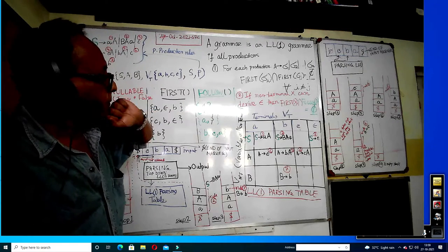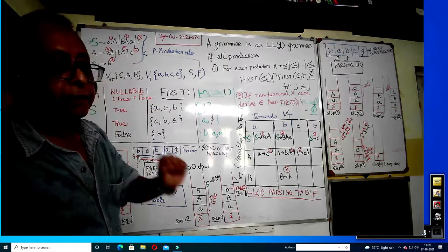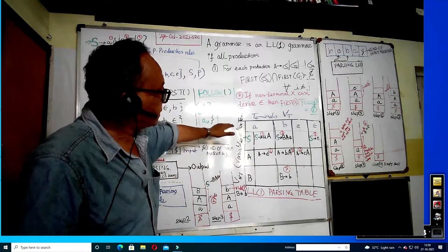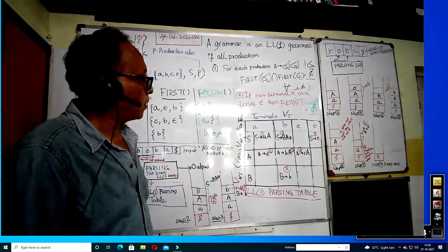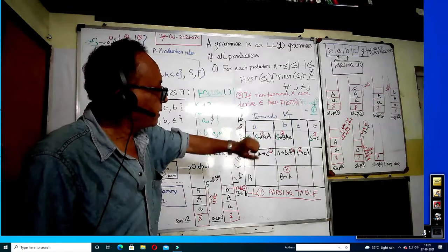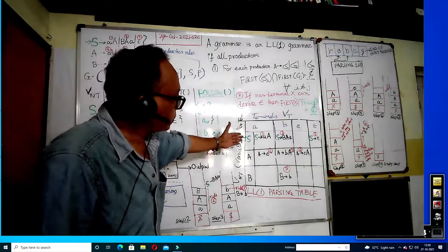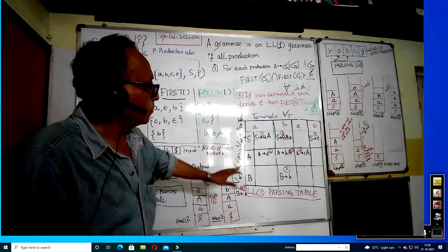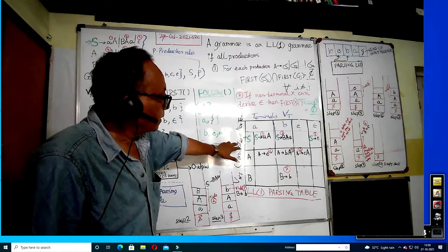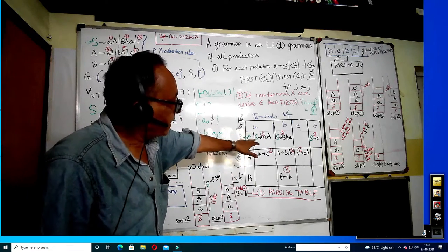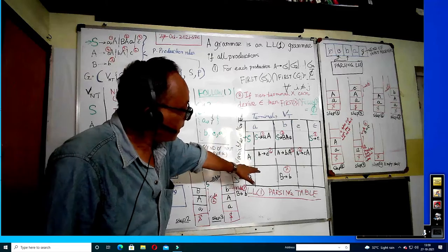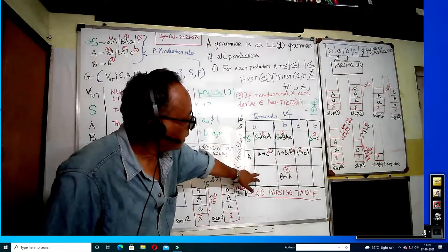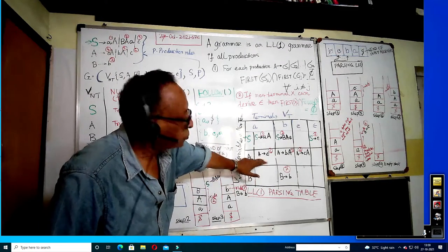LL(1) parsing can be done, but for LL(1) parsing we have to create a parsing table. The columns of the parsing table would be the terminals including epsilon, and the rows would be all the variables. For every variable and terminal combination, there should be one and only one rule. There may be some empty cells — that is okay — but if a rule is there, there should be only one.